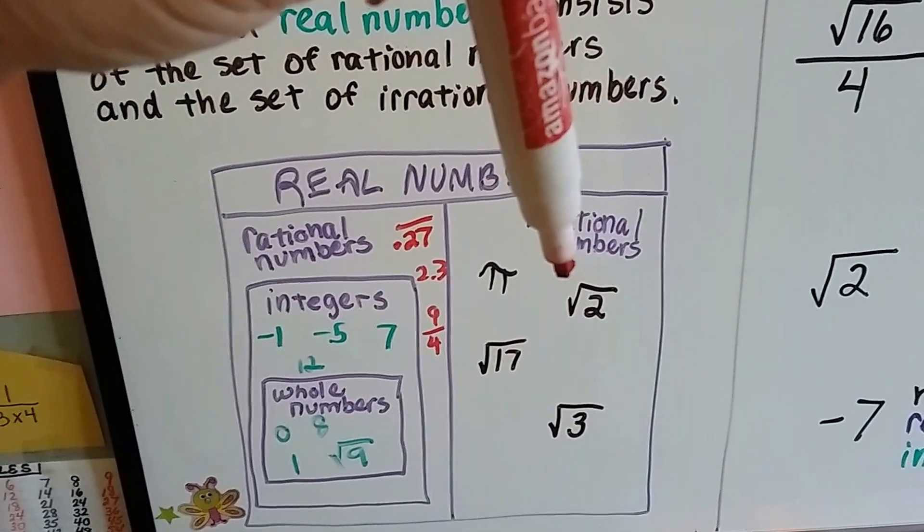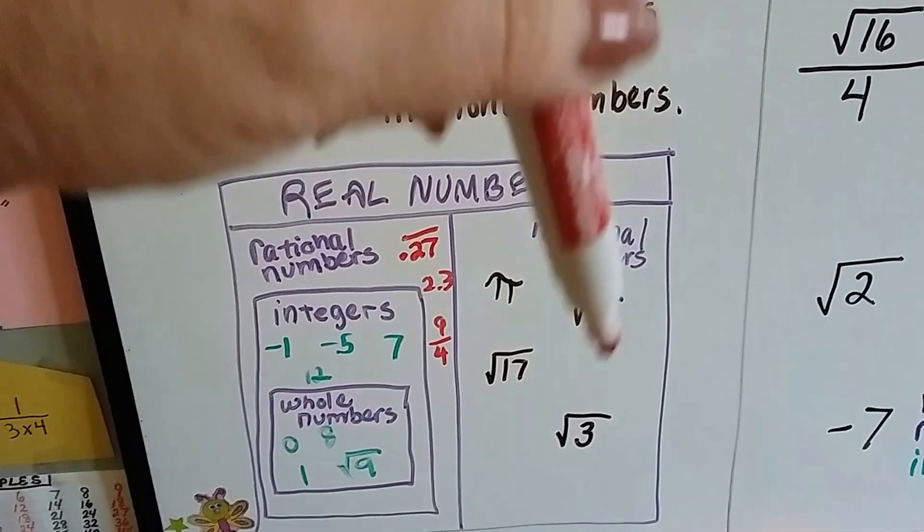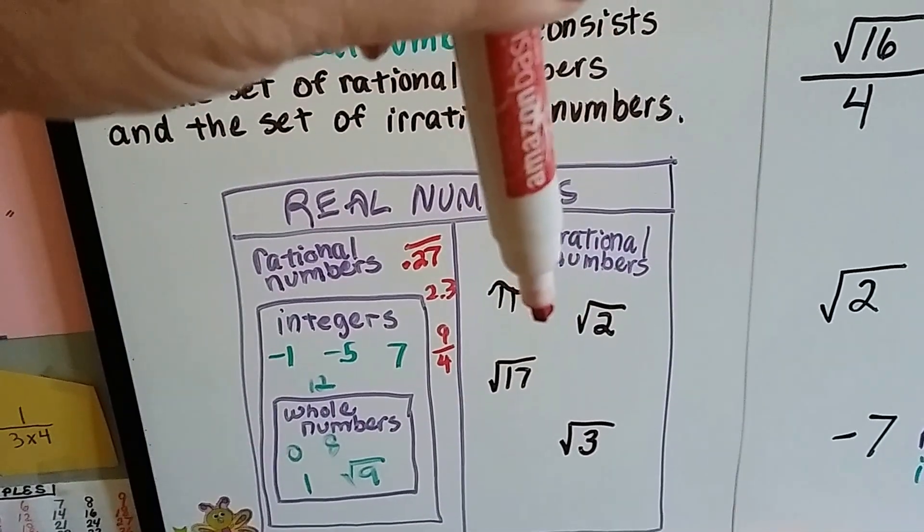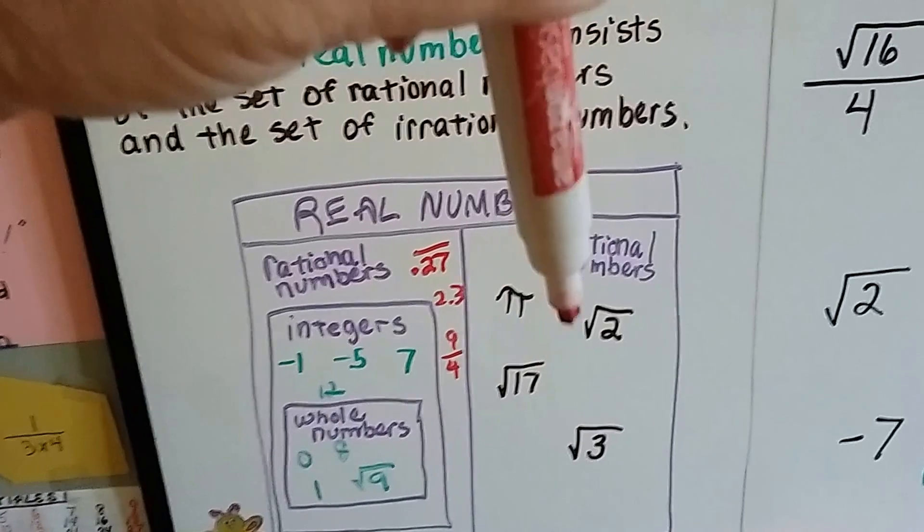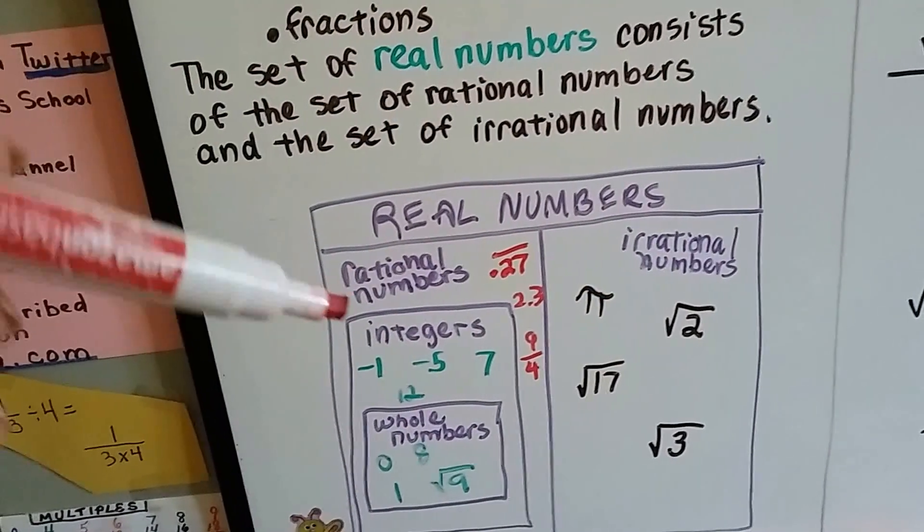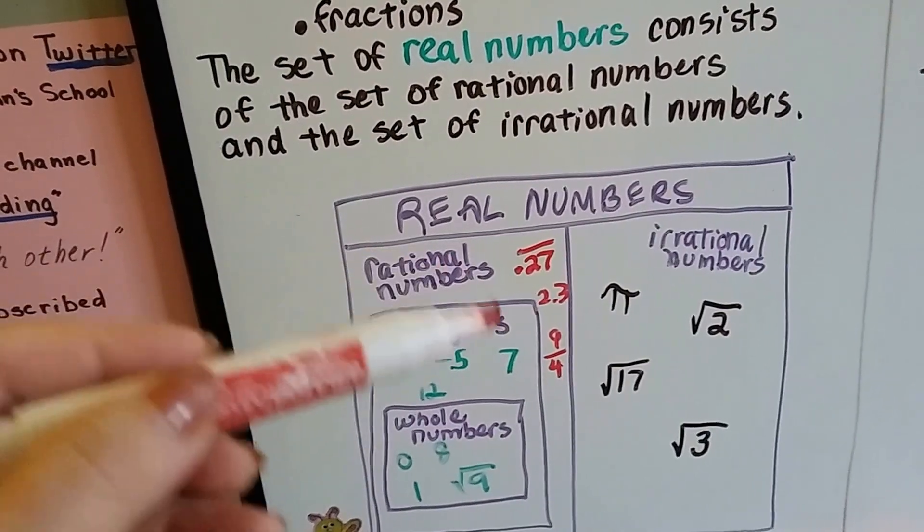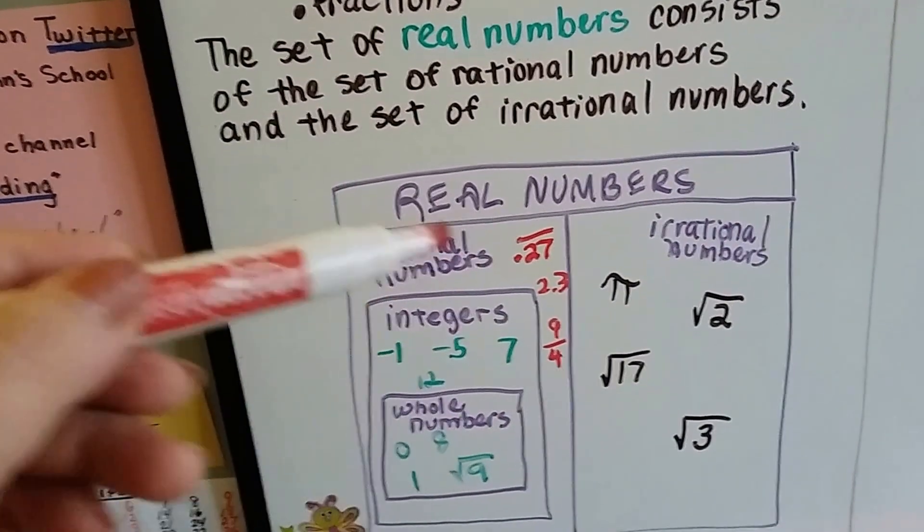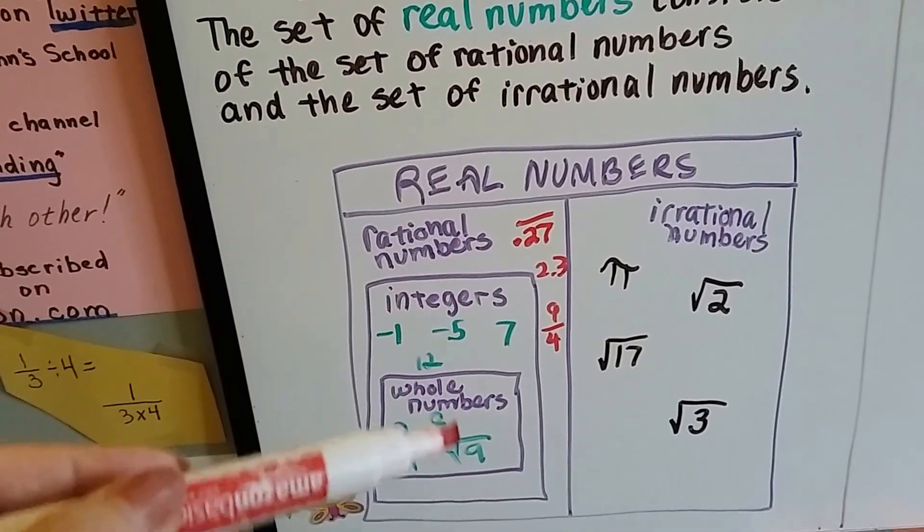The irrational numbers are all the numbers, like these, that are square roots that aren't perfect squares and pi is an irrational number. The rational numbers are all the other numbers. And they consist of integers and whole numbers.